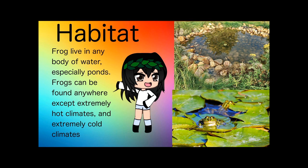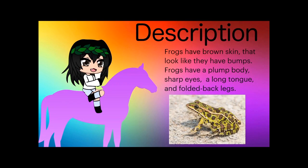Frogs can be found anywhere, in some extremely hot climates and extremely cold climates. Description: frogs have brown skin that looks like it has bumps on it. Frogs have a plump body, sharp eyes, a long tongue, and large back legs.